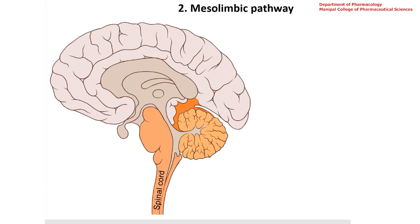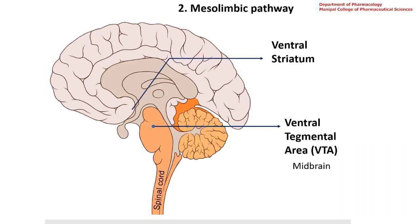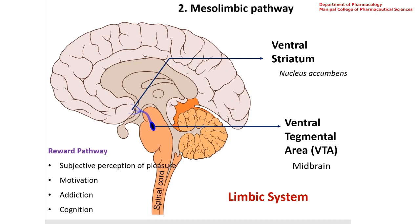Mesolimbic pathway. This pathway extends from ventral tegmental area in the midbrain to the ventral striatum, especially nucleus accumbens. The cell bodies of the neurons are located in the ventral tegmental area and they extend to the ventral striatum. This is a part of what is known as limbic system or the emotional brain. Mesolimbic pathway is also known as reward pathway and is associated with subjective perception of pleasure, motivation, addiction, cognition, etc.